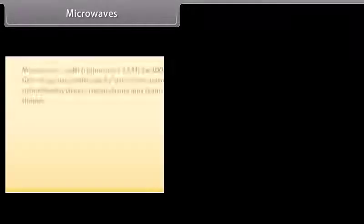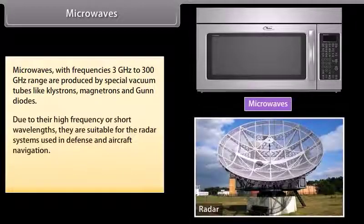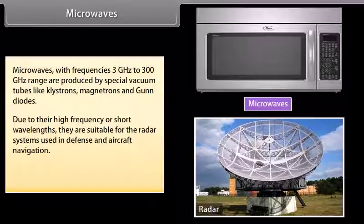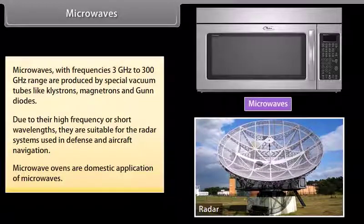Microwaves. Microwaves with frequencies 3 GHz to 300 GHz range are produced by special vacuum tubes like clistrons, magnetrons and gun diodes. Due to their high frequency or short wavelengths, they are suitable for the radar systems used in defence and aircraft navigation. Microwave ovens are domestic application of microwaves.